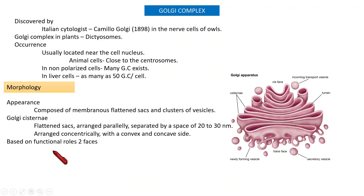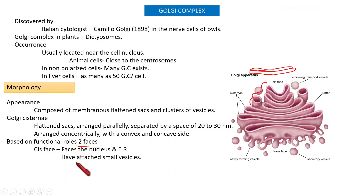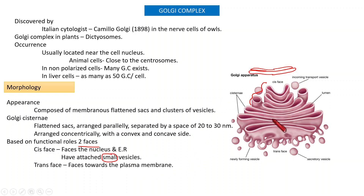Functionally, the Golgi complex has two phases: the cis phase and the trans phase. The cis phase faces the endoplasmic reticulum, and its vesicles are small in size.